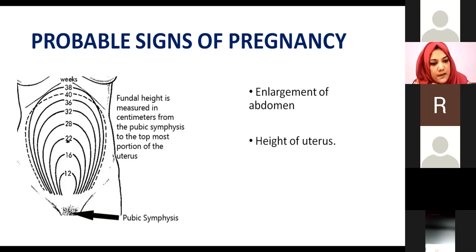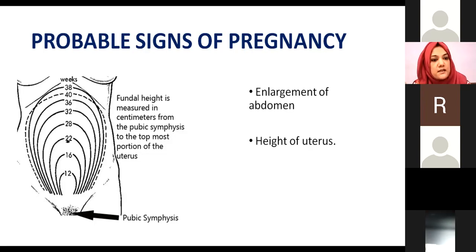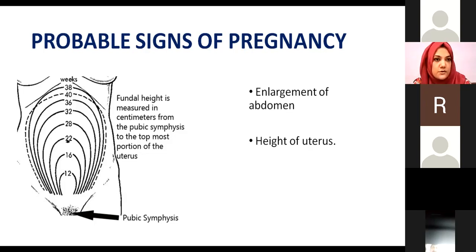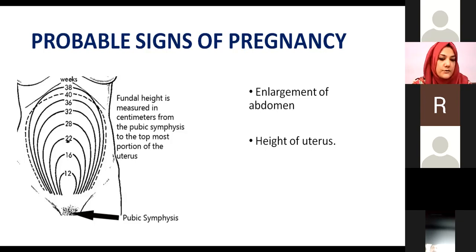If the height of the uterus is level with the umbilicus, it means around six months of pregnancy. In the last two months, as the fetus progresses into the pelvic canal, the uterine height may decrease and the abdominal height can reduce accordingly.